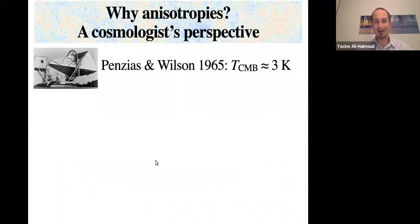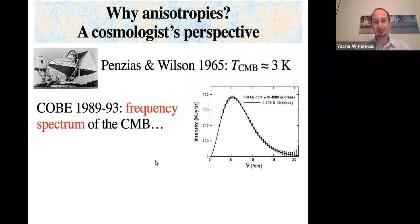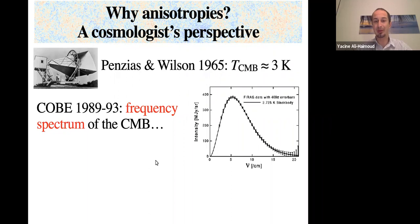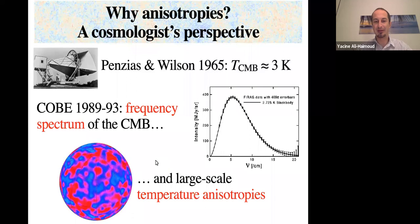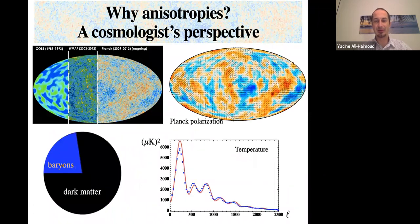So first, briefly, why anisotropies from a cosmologist's perspective? Cosmology arguably entered the modern era in 1965 when Penzias and Wilson measured one number about the cosmic microwave background, which is its overall temperature, assuming a perfect black body spectrum. 25 years later, COBE did measure the frequency spectrum of the CMB to very high precision and showed indeed that it was a perfect black body spectrum. Also, COBE measured the large scale full sky temperature anisotropies of the CMB. Following COBE, WMAP and then Planck have measured the CMB with increasing sensitivity and angular resolution. Not only the temperature, but also its polarization. And from this, we have been able to understand in great detail the energy content of the universe and its initial conditions.